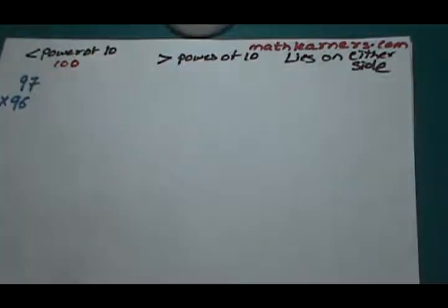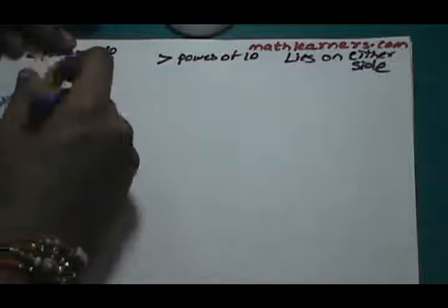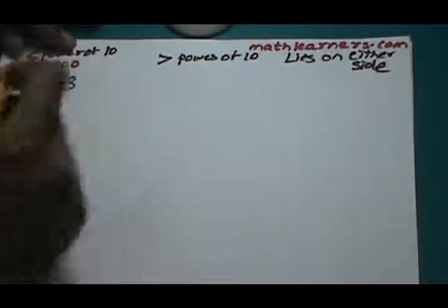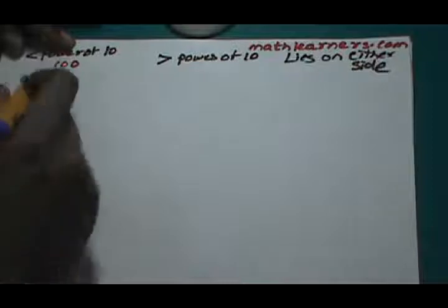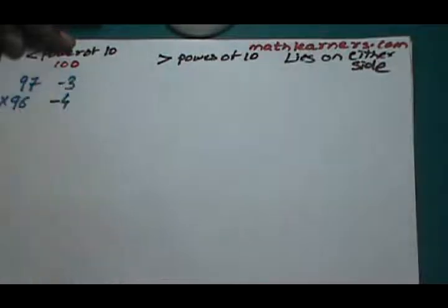97 is 3 less than 100, so we write this as minus 3. As 96 is 4 less than 100, minus 4 is written.